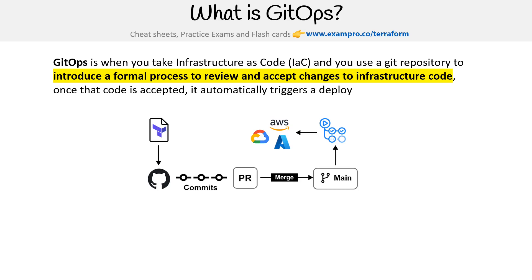The idea is you would have a Terraform file, and you would place that in something like GitHub. You would apply your commits, and when you're ready, you'd make a pull request. You would merge that pull request into the main branch, or whichever branch is set up for production, and that could trigger something like GitHub Actions.